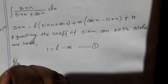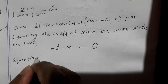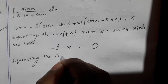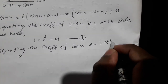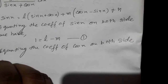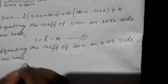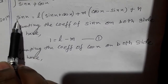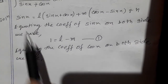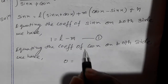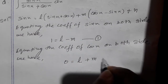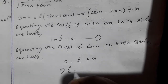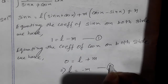Now equating the coefficient of cos(x) on both sides. There is no cos(x) on the left side, so it will be 0. From the right side we get L plus M. So 0 equals L plus M, which means L equals minus M. Take this as equation 2.